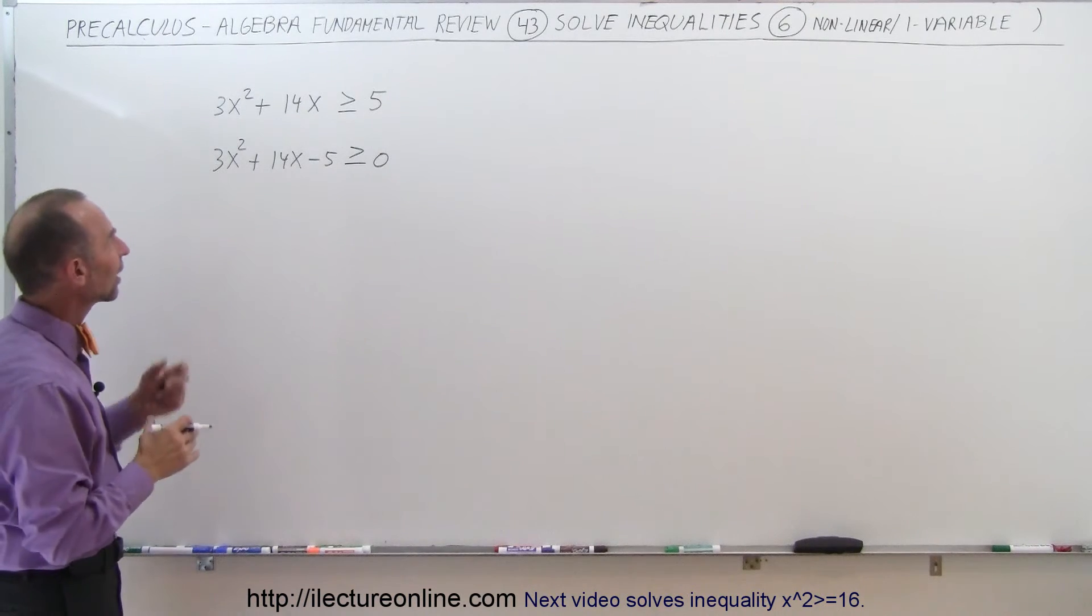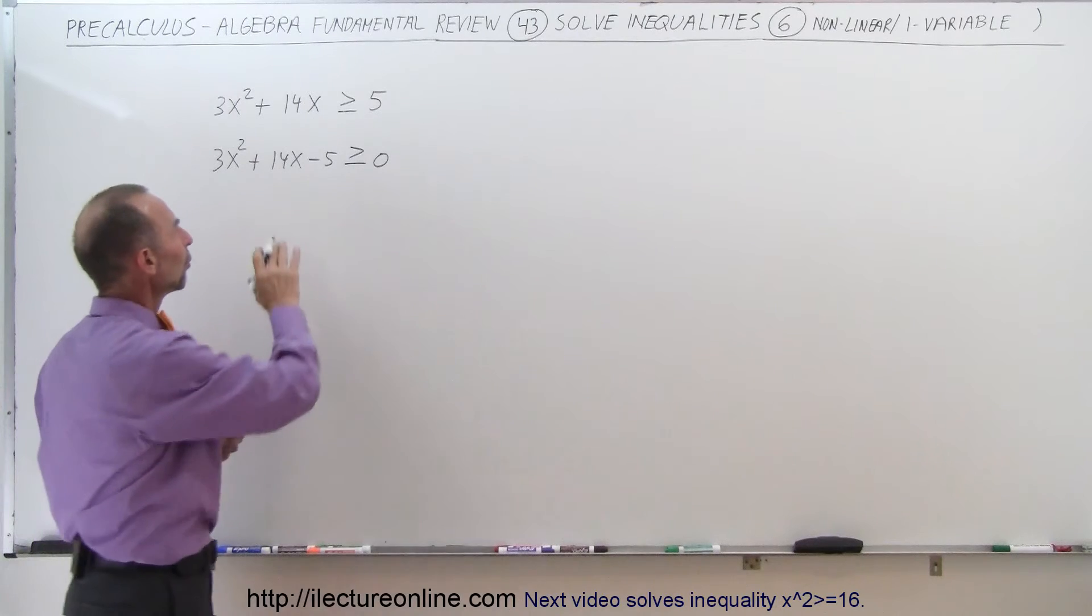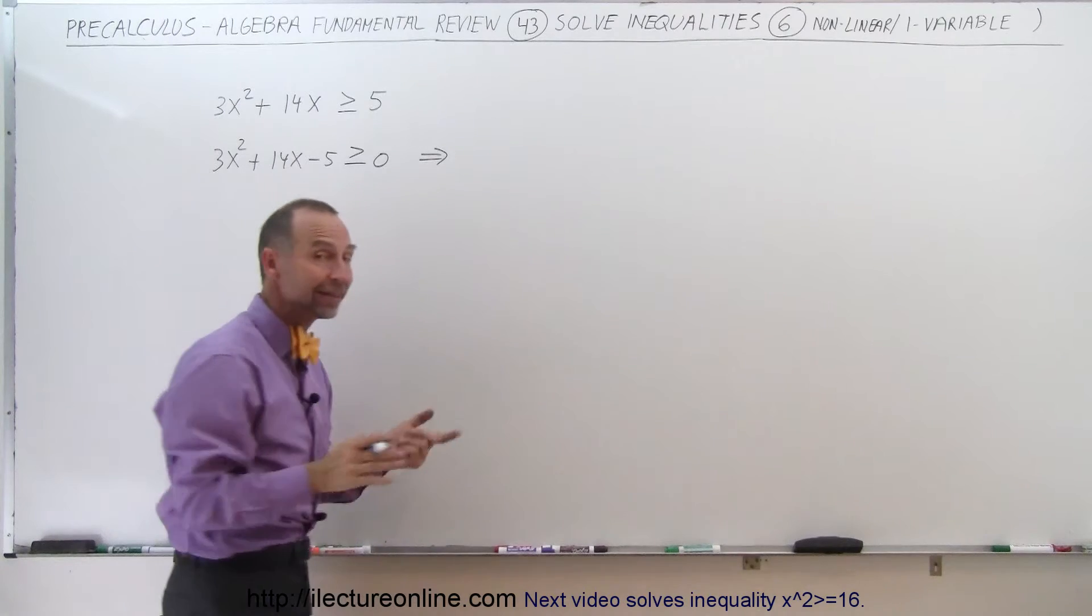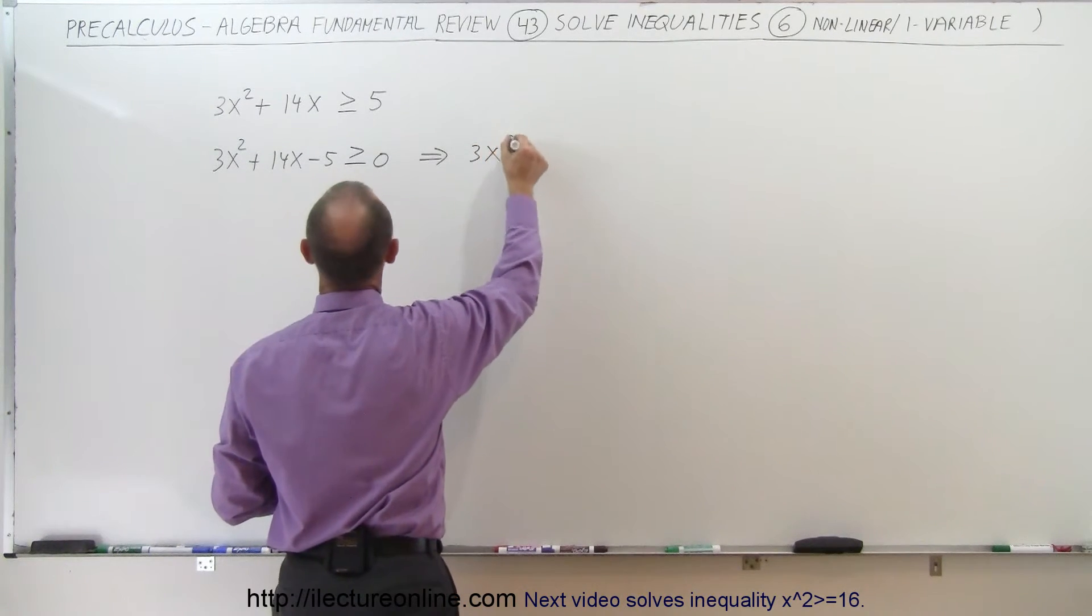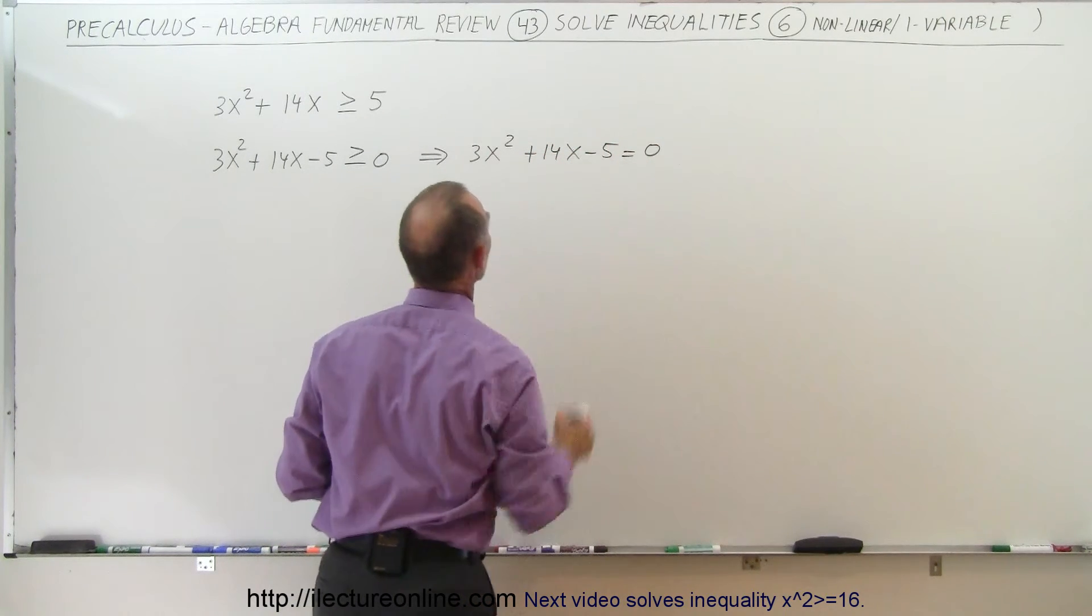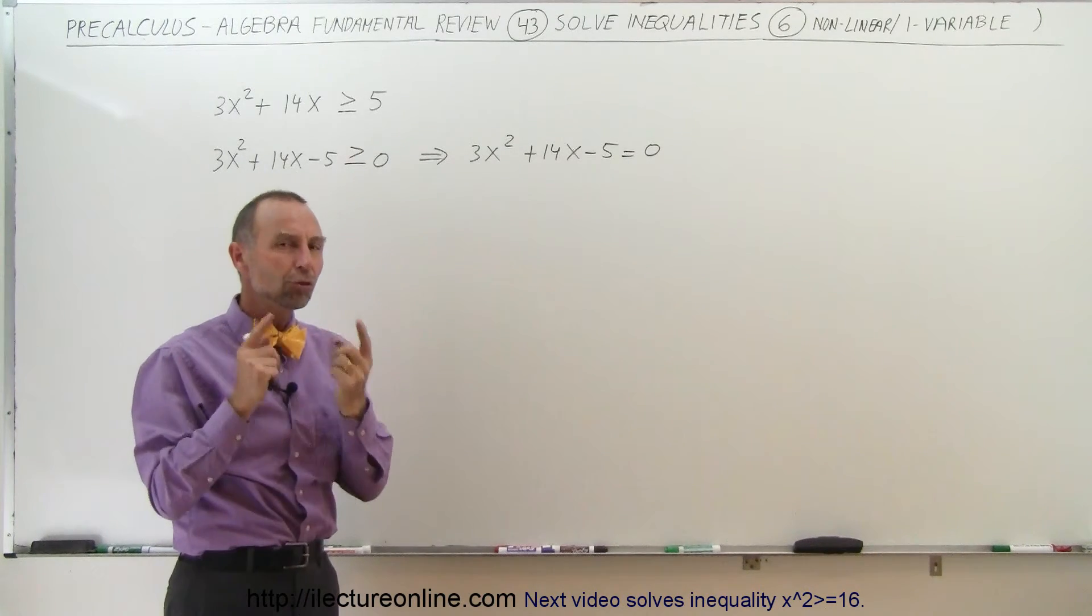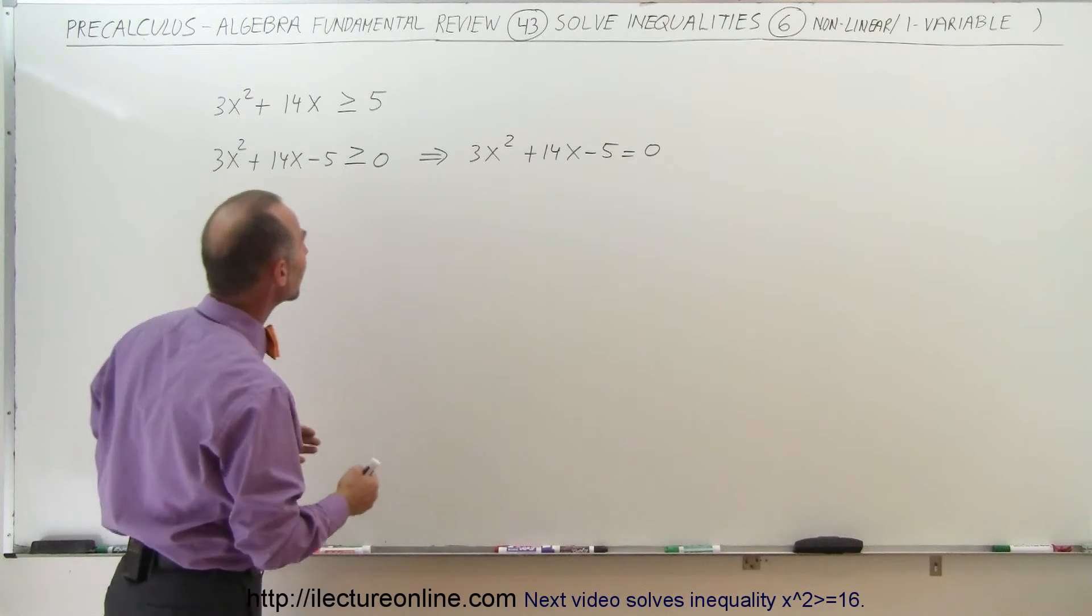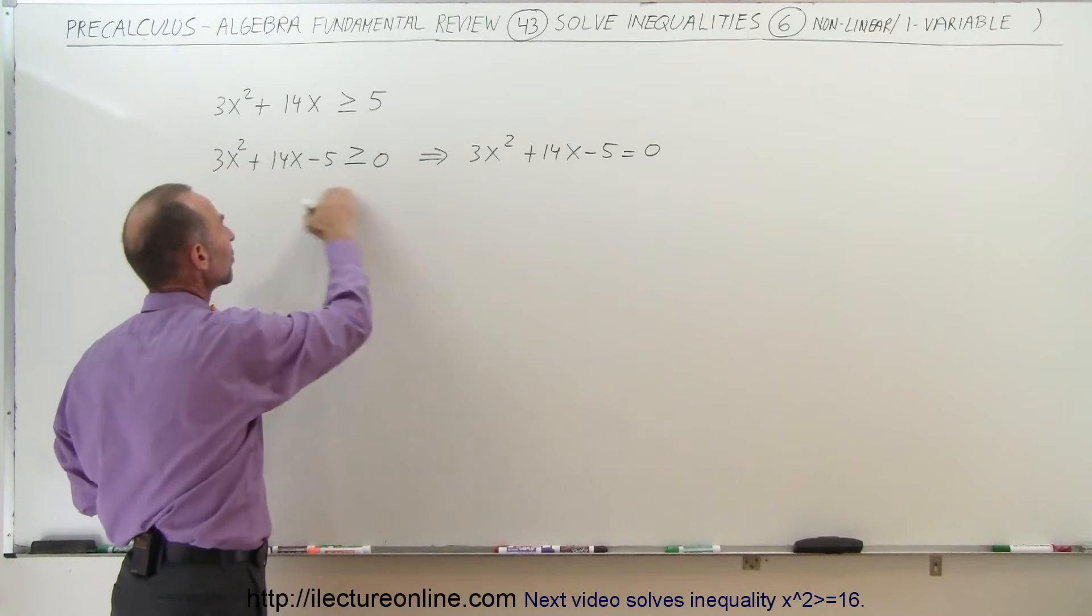Now that we have everything over to one side, we may be able to factor this. So what we're going to do here is write the equivalent equation with an equal sign instead of a greater than or equal sign. When we do that, we get 3x squared plus 14x minus 5 equal to zero. If we can solve this equation for x, we'll end up with two values for x, and those two values are the critical points of the regions that will satisfy this inequality. We're trying to find the critical points, the endpoints of the region of interest.